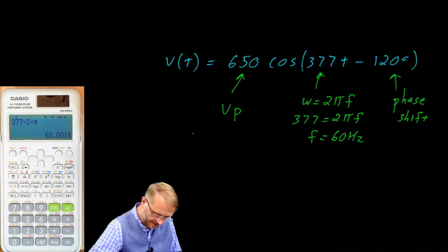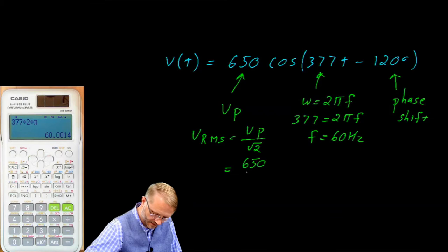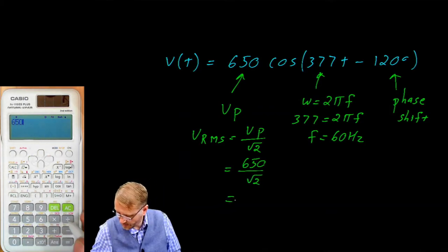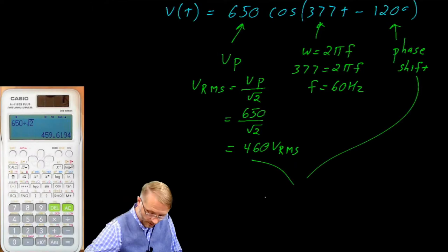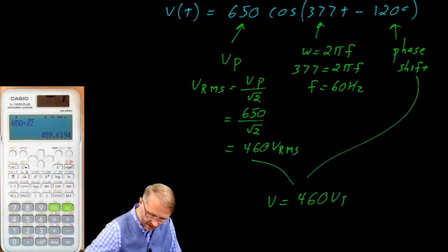On your note card you should have this equation that the RMS voltage is equal to the peak voltage divided by root 2. In this case it's 650 over the square root of 2. So our voltage is 650 divided by square root of 2 gives us 460 volts RMS. When we put this together we see that the voltage is equal to 460 volts RMS at a phase angle of negative 120 degrees.